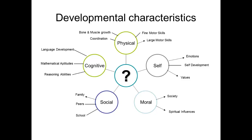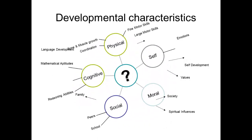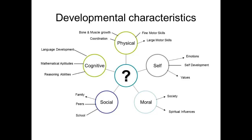What is the cog in the wheel — what does it all revolve around? Age. All of these different developmental characteristics depend upon age. Because development is a systematic, lasting change that is continuous and gradual, and as we have seen, it's influenced by many internal and external factors.